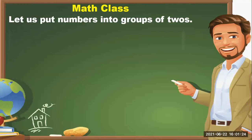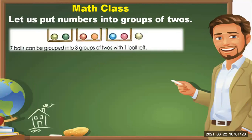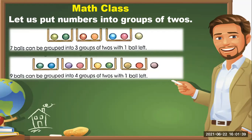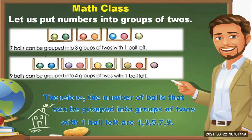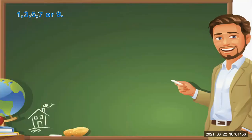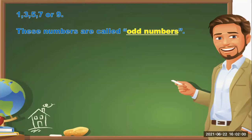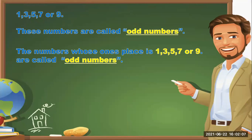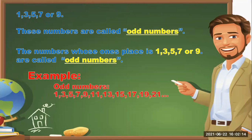Let us put numbers into groups of twos again. As you can see here, there are seven balls. Seven balls can be grouped into three groups of twos with one ball left. Nine balls can be grouped into four groups of twos with one ball left. Therefore, the numbers one, three, five, seven, and nine are called odd numbers.